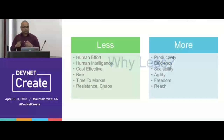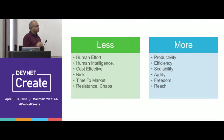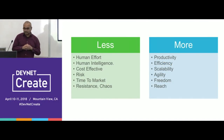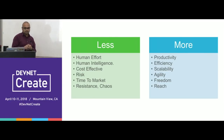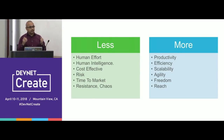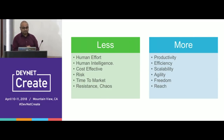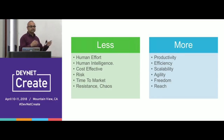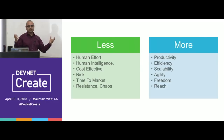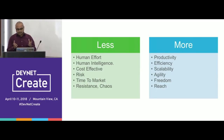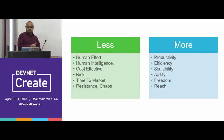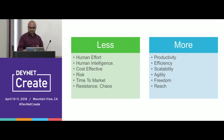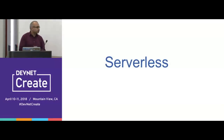The point I want to make is we are inventing to abstract something and make things more efficient, to do more. Why less? Less gives us less human effort, less intelligence required, more cost-effectiveness, less risk, less time to market, less resistance and chaos — think about hundreds of people rowing a boat, it's chaotic. It is going to provide more productivity, efficiency, scalability, and freedom and reach.